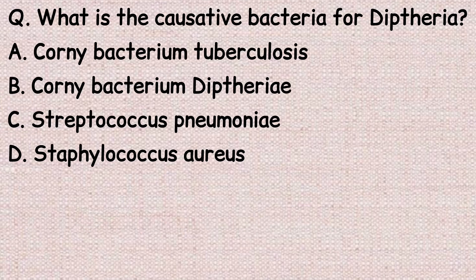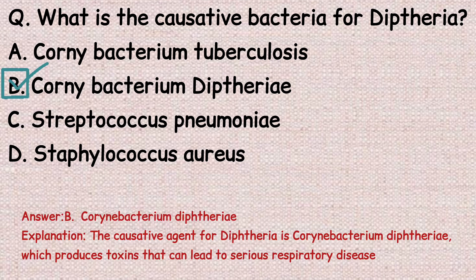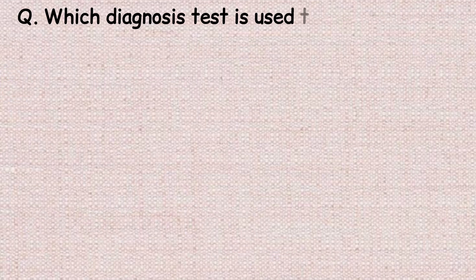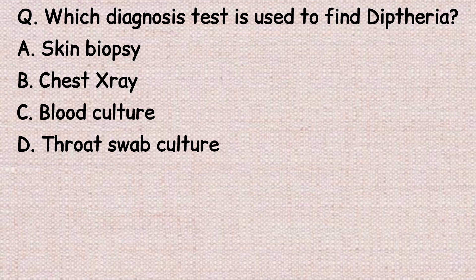The next question: what is the causative bacteria for diphtheria? Option A: Corynebacterium tuberculosis. Option B: Corynebacterium diphtheriae. Option C: Streptococcus pneumoniae. Option D: Staphylococcus aureus. The correct answer is option B, Corynebacterium diphtheriae. The causative agent for diphtheria is Corynebacterium diphtheriae, which produces toxins that can lead to severe respiratory disease.